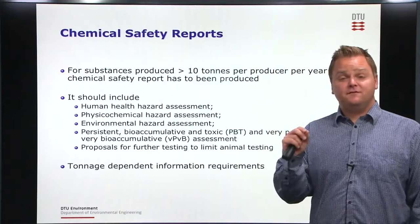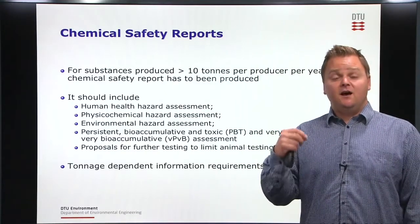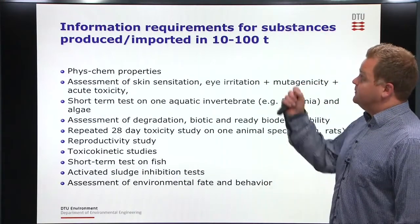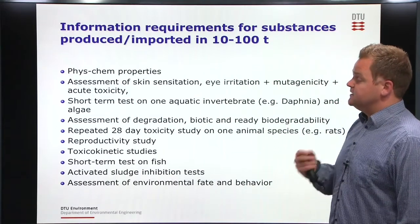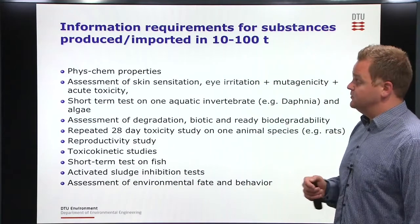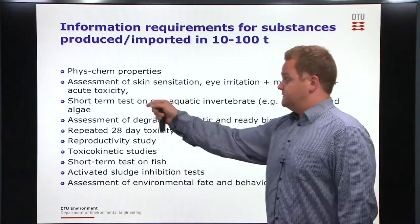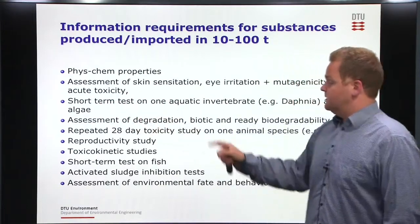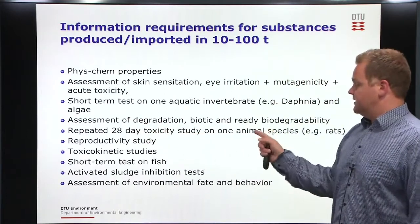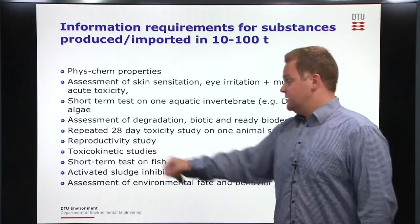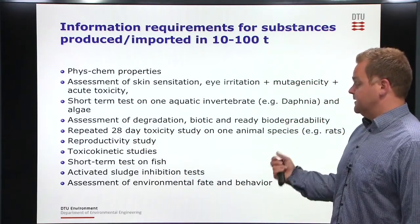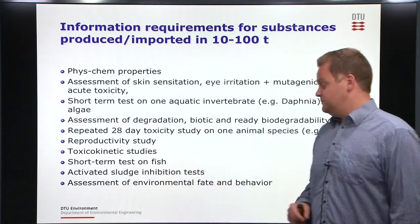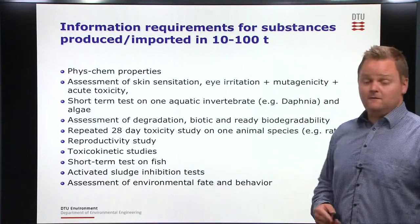The exact amounts of information that have to be included in the technical dossier or chemical safety assessment are tonnage dependent. For chemicals produced between 10 and 100 tons, the chemical safety assessment has to include physical chemical properties, an assessment of skin sensitization, eye irritation, mutagenicity and acute toxicity, a short-term test on one aquatic invertebrate, an assessment of degradation and ready biodegradability, a repeat 28-day toxicity study on one animal species, a reproductive study, a toxicokinetic study, a short-term study on fish, an activated sludge inhibition test, and finally an assessment of environmental fate and behavior.